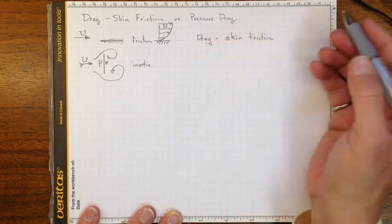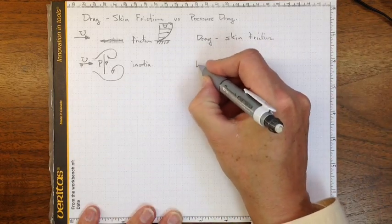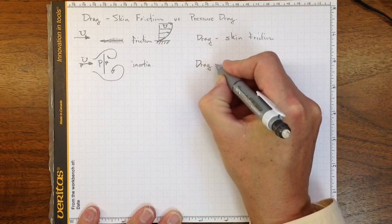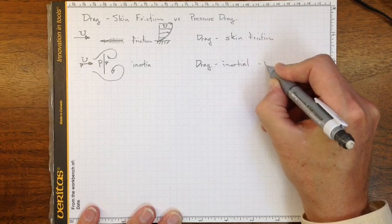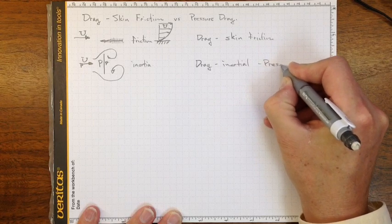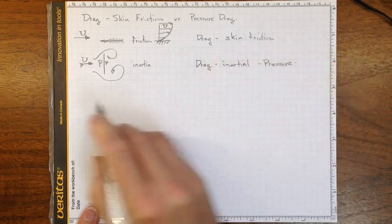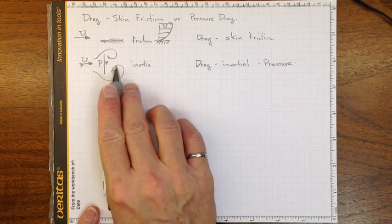This one, our drag is primarily inertial, and we usually refer to that as pressure drag, because of the higher pressure on the front and lower pressure on the back.